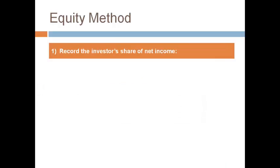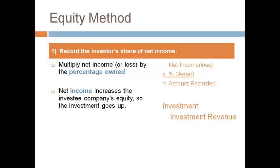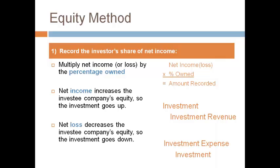The first journal entry records the investor's share of the investee's net income. Multiply the investee's net income by the percent ownership to get the change to the investment account. Income increases the investment account and the investor reports revenue on the income statement. Losses reduce the investment account and the investor reports an expense. The revenue and expense are non-cash — no cash is paid or received.